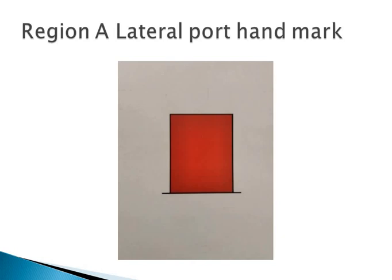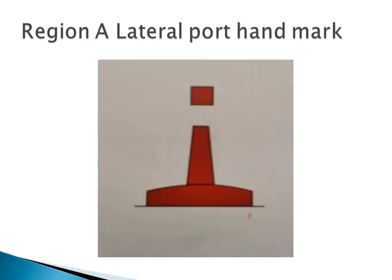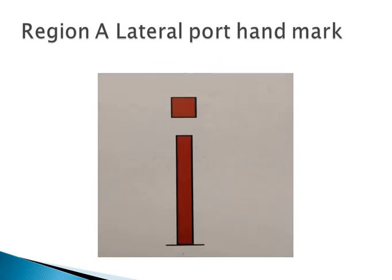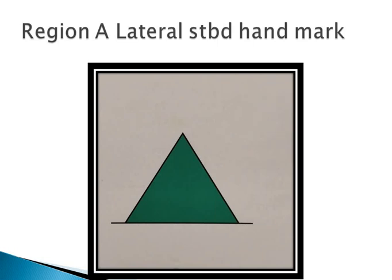Region A lateral port hand mark: color red, top mark single red can, light red, rhythm any other than composite group flashing 2+1. By looking at the card — the Coca-Cola can indicates Region A — lateral port hand mark, color red, top mark single red can, light red, rhythm any other than composite group flashing 2+1.